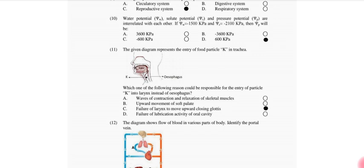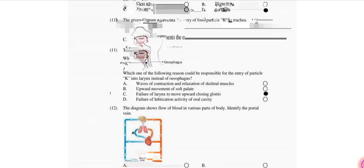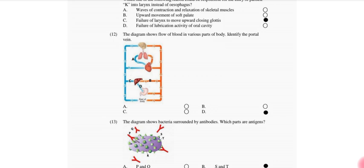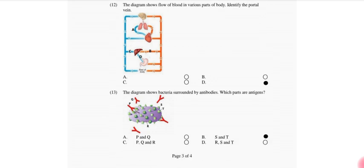The diagram shows flow of blood in various parts of the body. Identify the portal vein. So that is option D. The diagram shows bacteria are surrounded by antibodies. Which parts are antigens? So that is S and T as the antigens which are attached to the antibody.